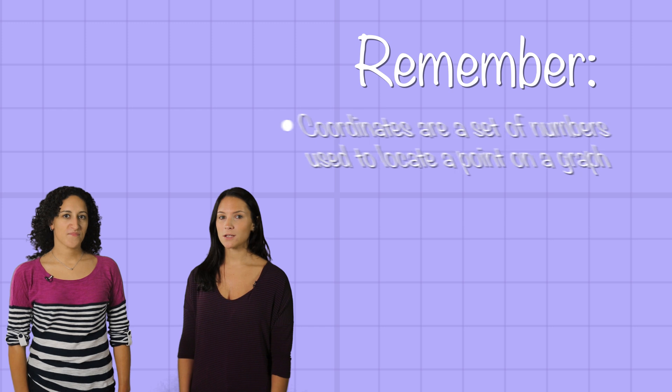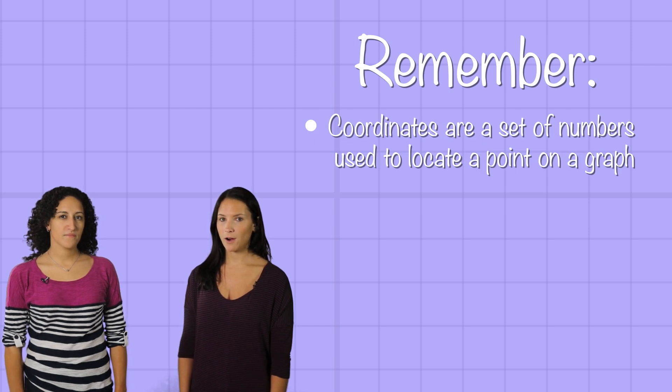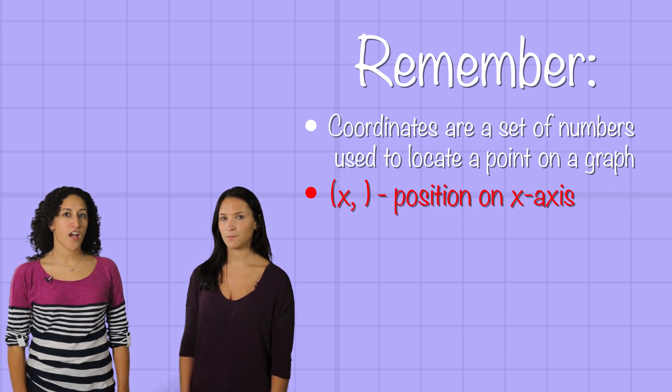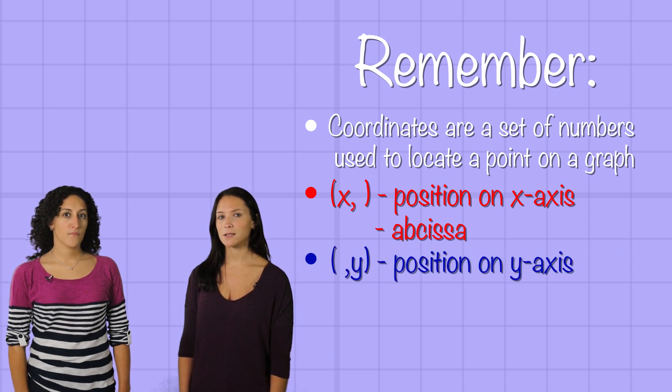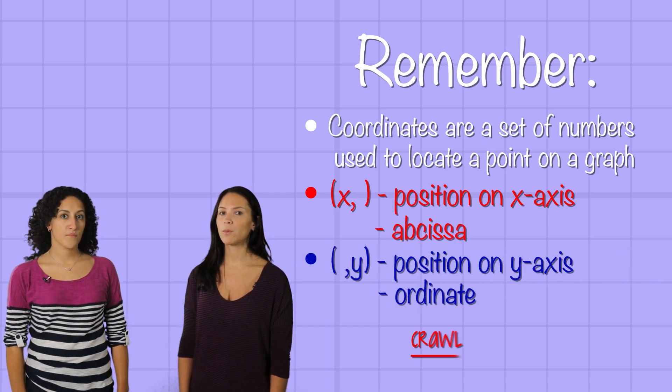So remember, coordinates are a set of numbers used to locate a point on a graph. The first is the position on the x-axis, or abscissa. The second is the position on the y-axis, or ordinate. Remember, crawl before you climb.